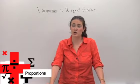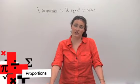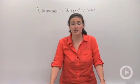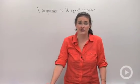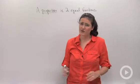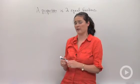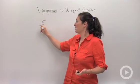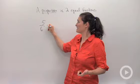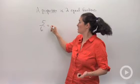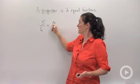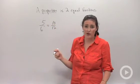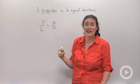A proportion is two equal ratios. You can also think of it as two equal fractions, and you guys already know a lot about fractions. For example, let's say I were to write 5 sixths is equal to 10 twelfths — you guys know those are equivalent fractions.